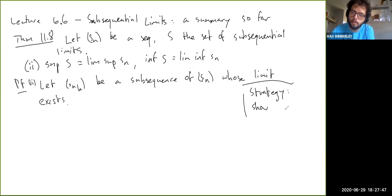So the strategy: show that the lim sup Sn is an upper bound for S. And of course, the lim inf can be treated similarly, showing that it's a lower bound. Because that will show that sup of S is less than or equal to the lim sup of S. But we also know that the lim sup of S is actually in S. So it's actually the maximum. So we'll show that it's an upper bound for S.